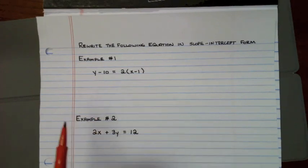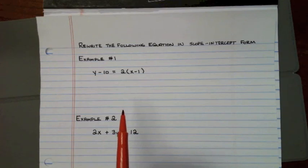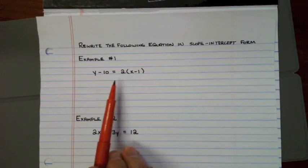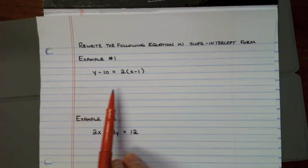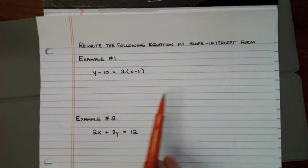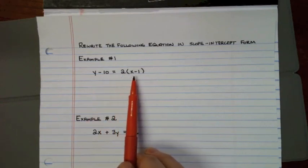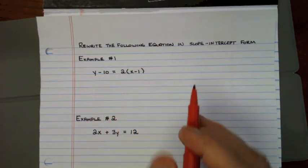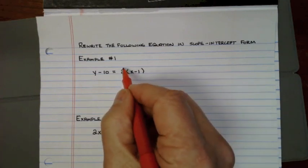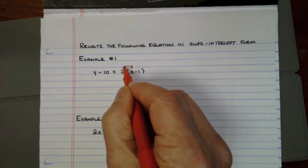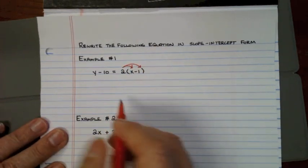What we do is use all our rules for solving an equation — essentially, we're going to solve for Y. We want the equation to look like Y equals the slope beside X and the Y-intercept on the end. One rule is to use the distributive property first, so we take the 2 and multiply it to each term inside the parentheses.